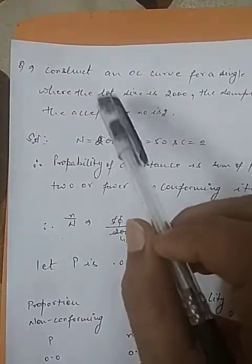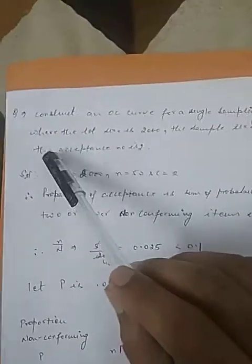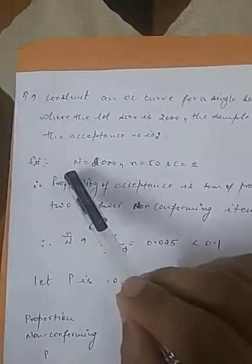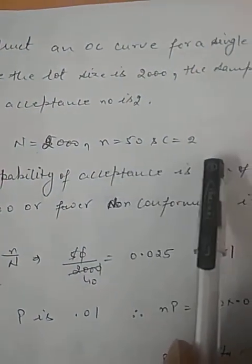Good morning students, today we are going to discuss one numerical problem on operating characteristic curve. Construct an OC curve for a single sampling plan where the lot size is 2000, the sample size is 50, and the acceptance number is 2. So here it is given N equals 2000, n equals 50, and C equals 2.